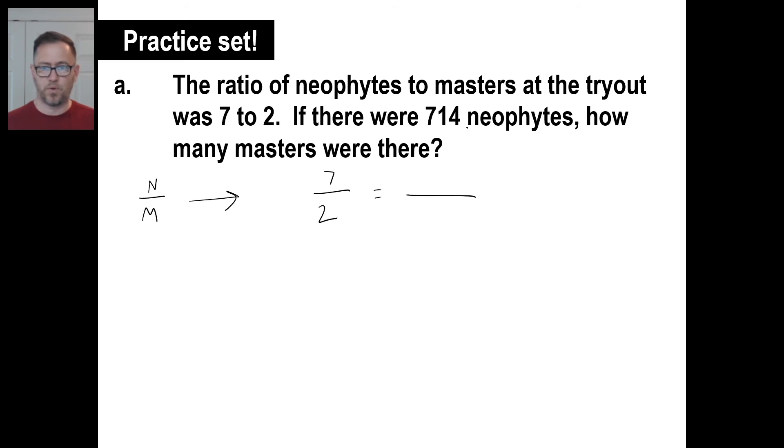If there were 714 neophytes, that's going to be the top, so I got 714. How many masters? There's my M. Let's do our cross multiplication. Anytime you're able to do quick arithmetic and look across and go, what do I multiply this by to get this, you can do the same thing to the bottom. You could say 7 times what is 714. You could go, 7 times what is 700? 100. But anyway, we'll just do the equation.